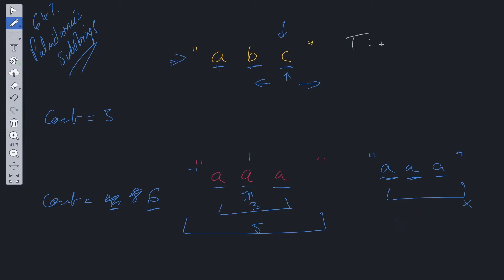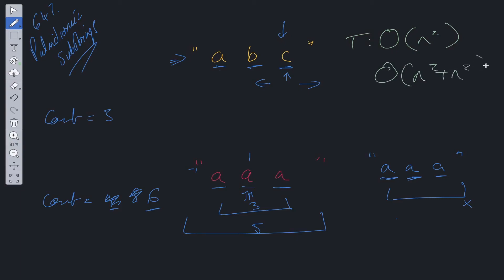Time complexity for this algorithm: we have to loop through the string n times, and we need to expand on every character which is also n operations — so it's O(n²). We need to do this for both odd and even substrings, giving O(n² + n²), which simplifies to O(n²). Space complexity is O(1), simply because we aren't allocating any extra space.